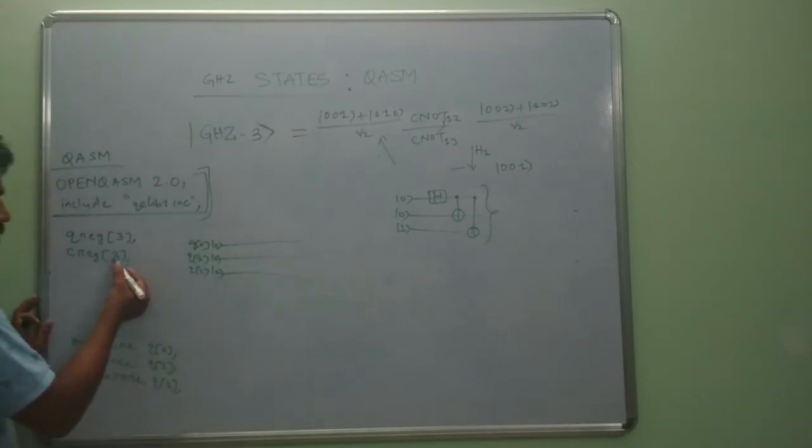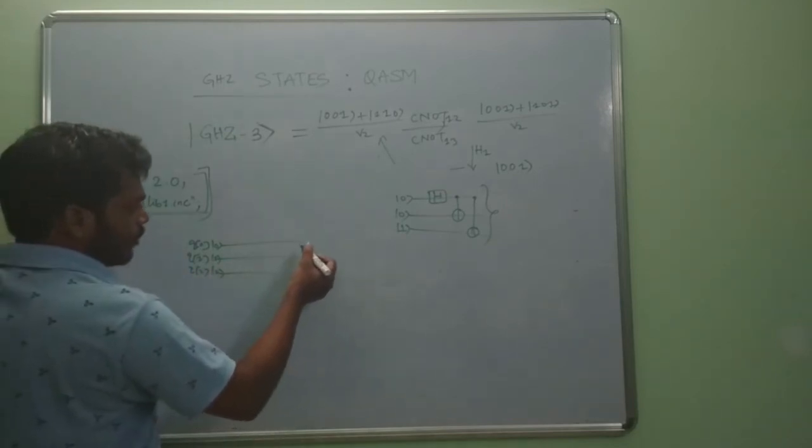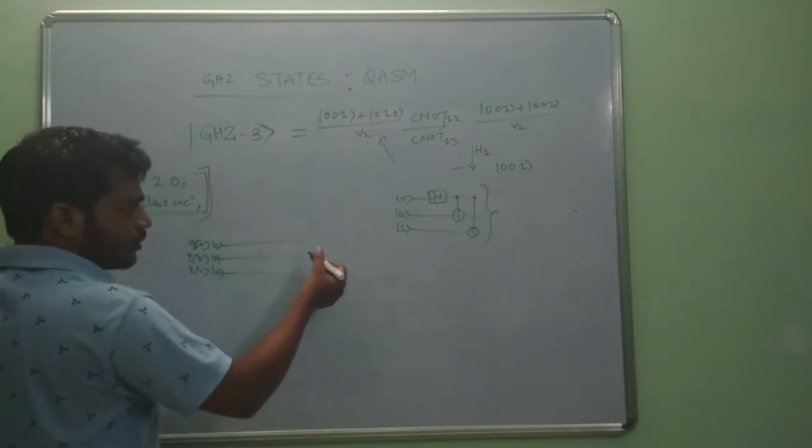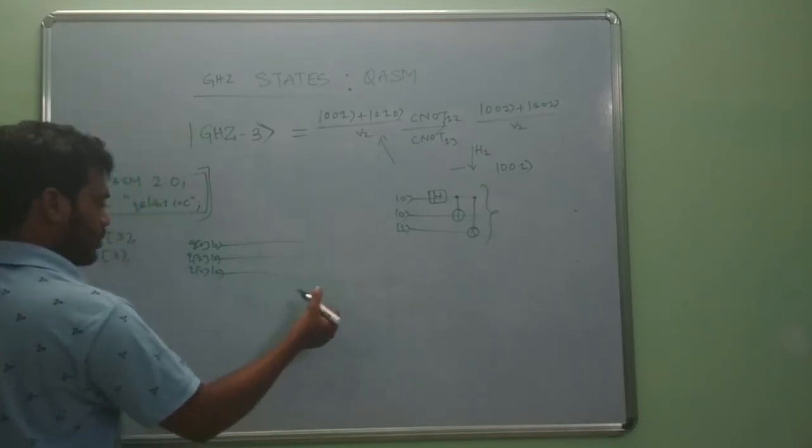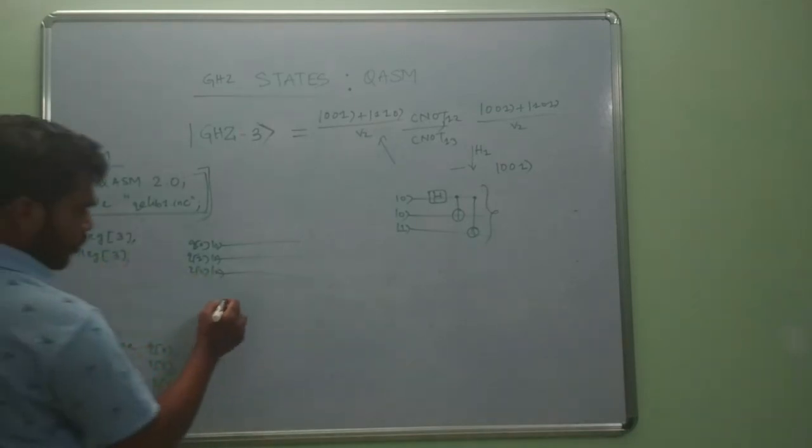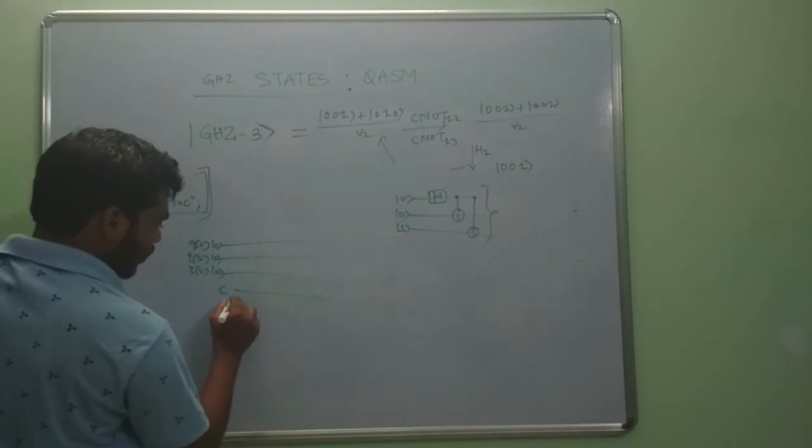We are taking three classical registers where if you measure the three qubits, the values will be stored in the classical registers. So we have the classical register C3.